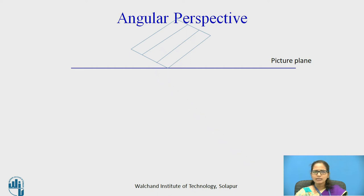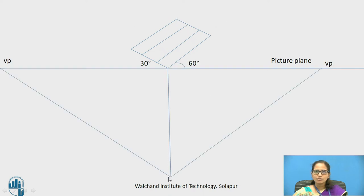When you have equal sides — that is the case of a square object — it should be kept at an angle of 30 degrees. In case of a rectangular object, the sides are kept at angles of 30 and 60 degrees. This is the top view of the object kept at the picture level. The station point is the point of observation, taken at a distance of 2D — that is 2 times the maximum longer dimension of the object — from the picture plane.